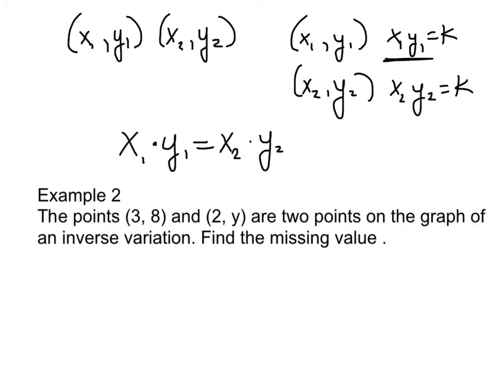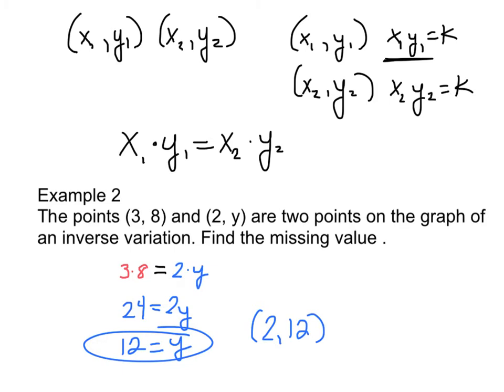Let's do example 2. Example 2 says, the points (3, 8) and (2, y) are two points on the graph of an inverse variation. Find the missing value. Well, we know that if we take the product of 3 times 8, it would have to equal the product of 2 times y. So our equation is really just 24 equals 2y. If you solve for y, the missing value would be 12. That's it. The missing value is 12. So the actual ordered pair would be (2, 12), which is on the graph that also includes the point (3, 8).